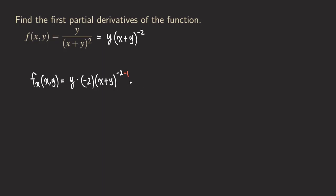We're not finished yet because we still have the inner function. By the chain rule, we need to multiply by the derivative of the inner function. Because we are differentiating with respect to x, x becomes one and y is a constant, so y gives us zero. So the chain rule factor is simply one. Simplifying the expression: negative two and y go to the numerator, and because we have a negative exponent, we bring it to the bottom, giving us (x+y) to the third power in the denominator.